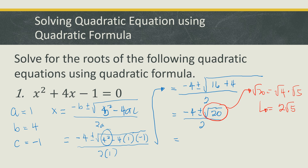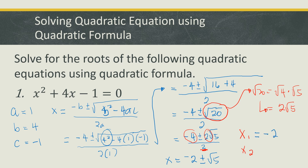So we have negative 4 plus or minus 2 square root of 5, divided by 2. This can be simplified: negative 4 divided by 2 is negative 2, and 2 divided by 2 is 1. So we now have the two solutions. The first solution, x₁, is negative 2 plus square root of 5, and the second solution, x₂, is negative 2 minus square root of 5.